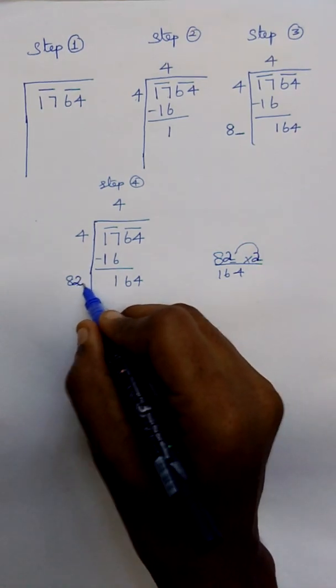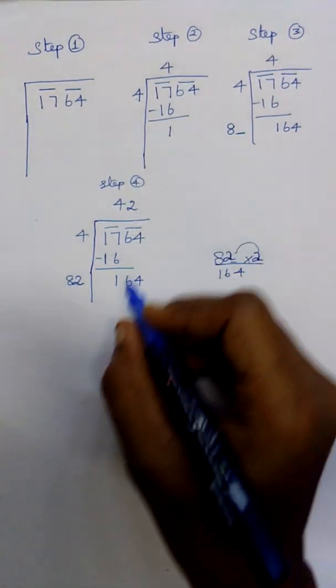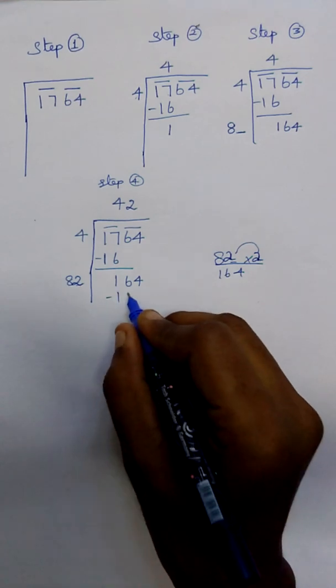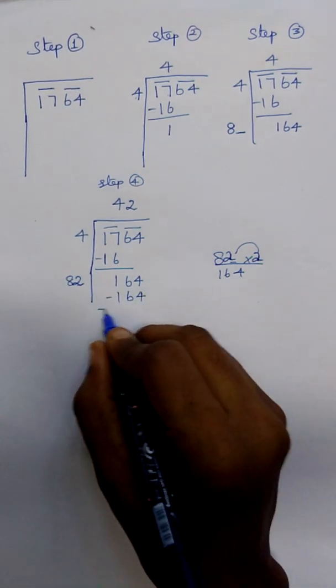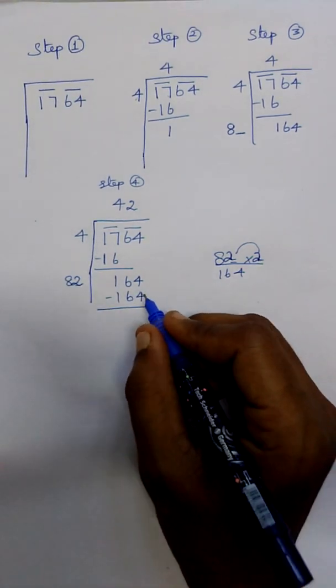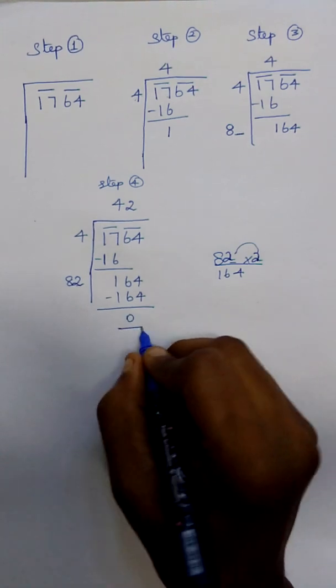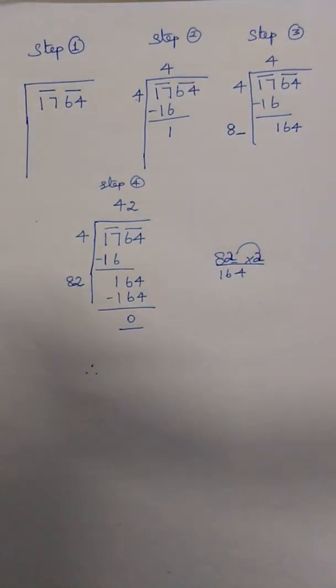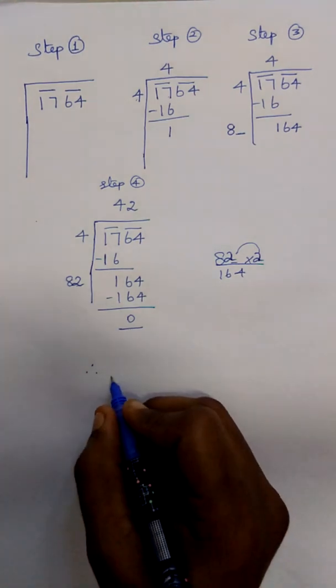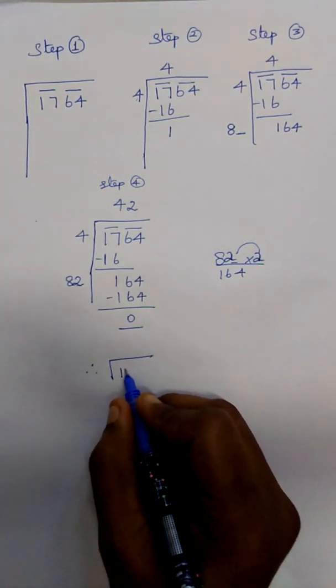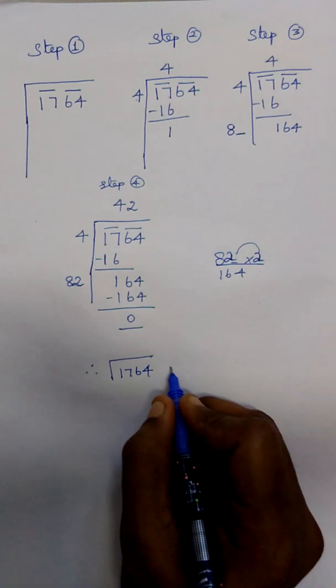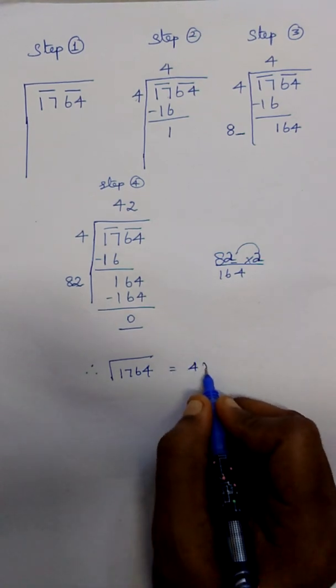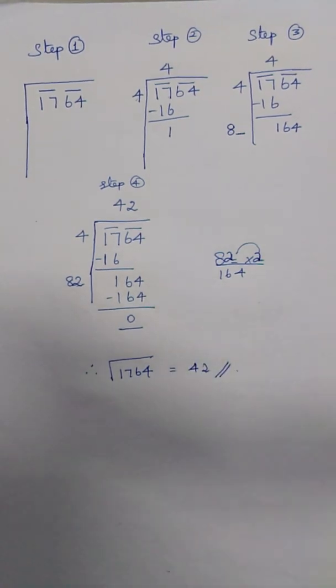Two eights are sixteen. One hundred and sixty-four minus one hundred and sixty-four equals zero. Therefore, the answer is: square root of 1764 is 42. Children, thank you. See you.